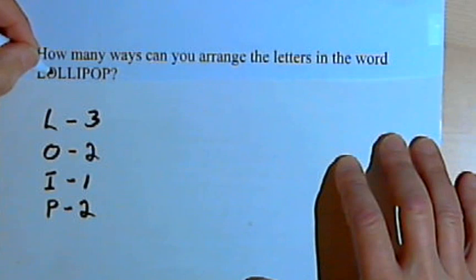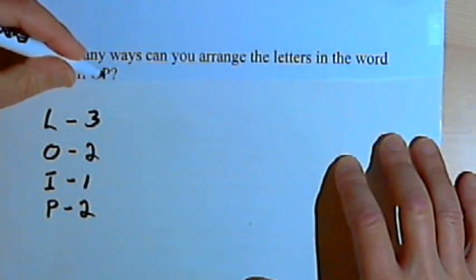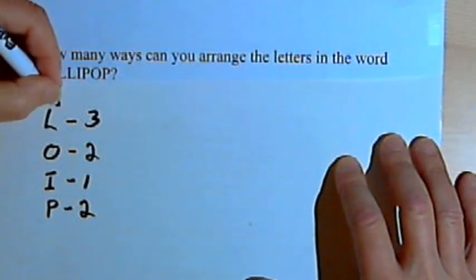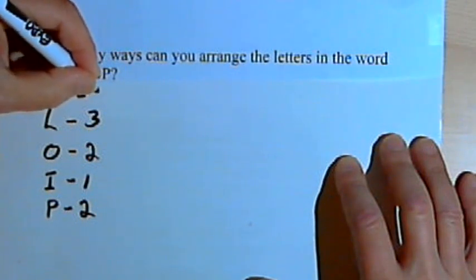And we've got the letter P occurring 2 times. And there are a total of 1, 2, 3, 4, 5, 6, 7, 8 letters. So for this problem, N is going to equal 8.